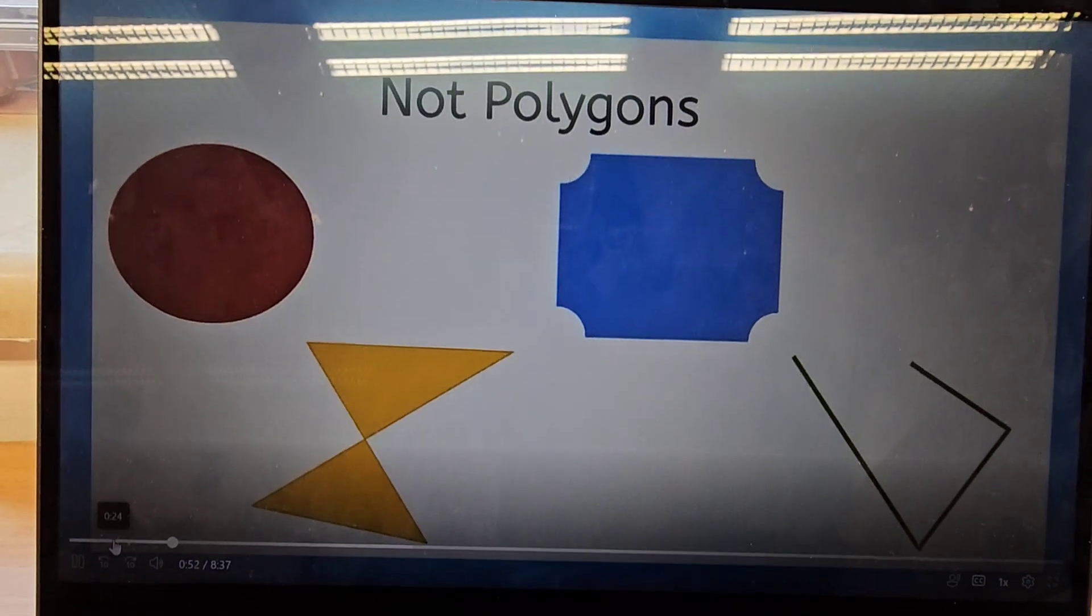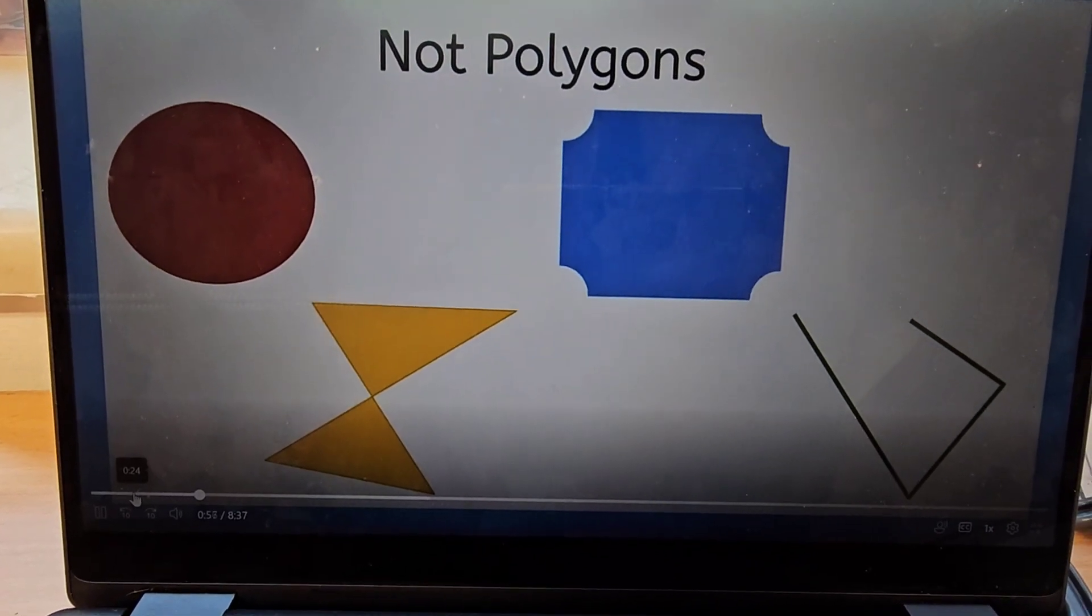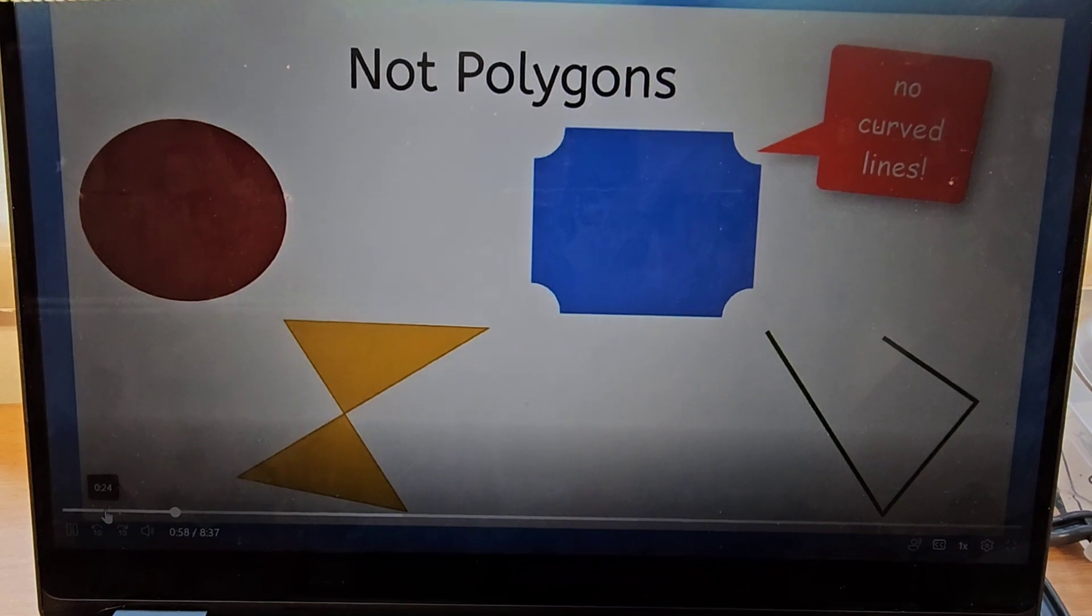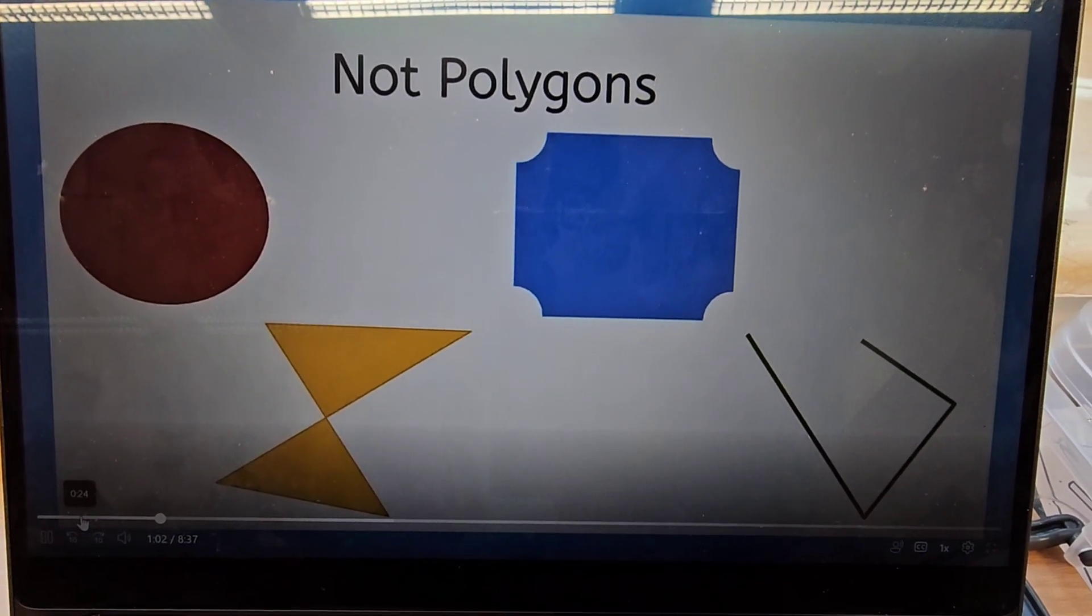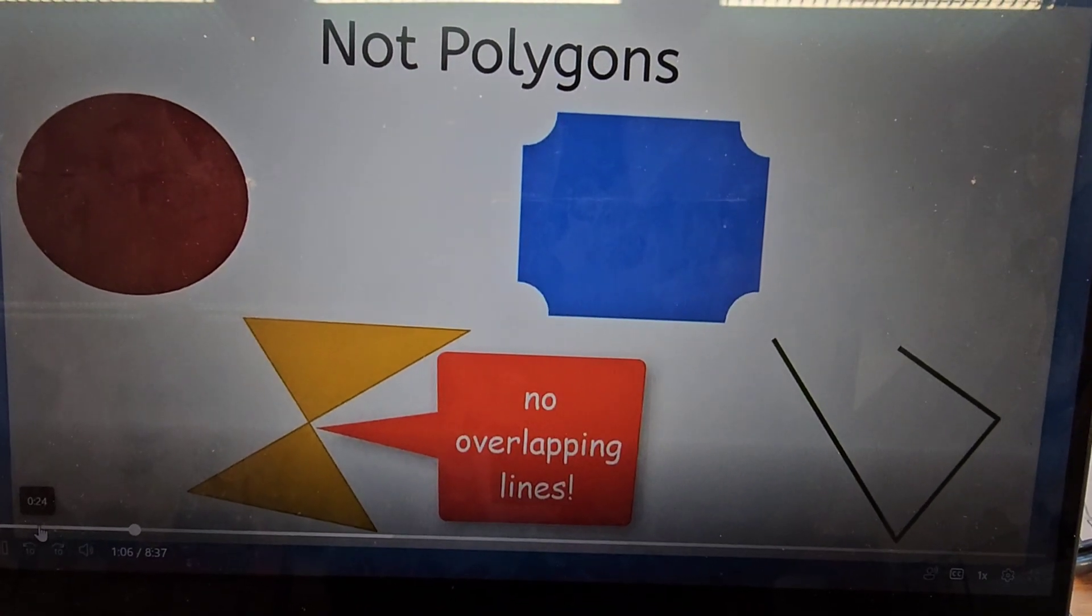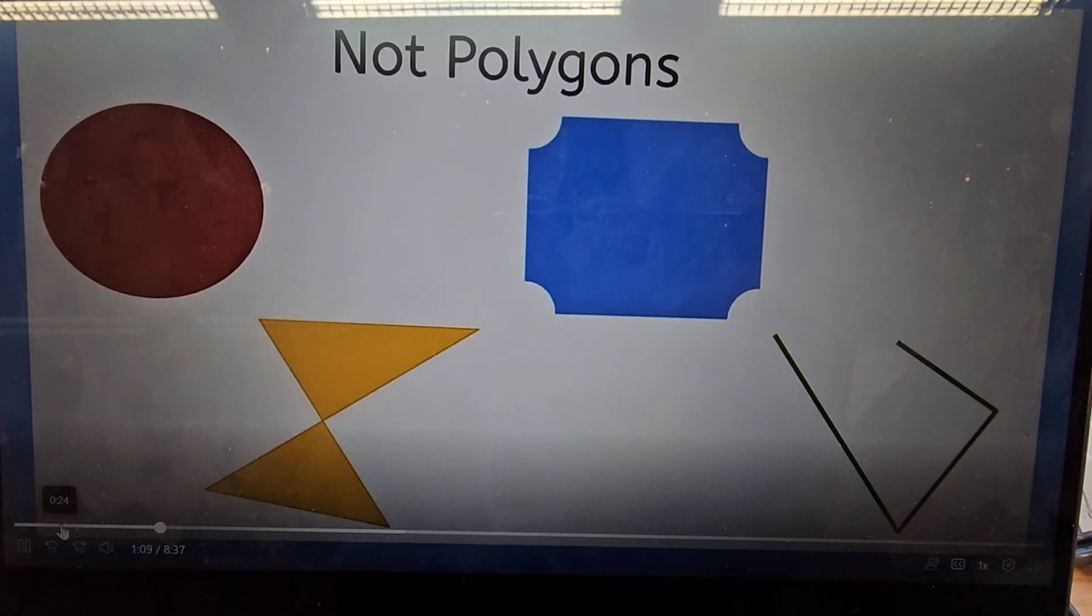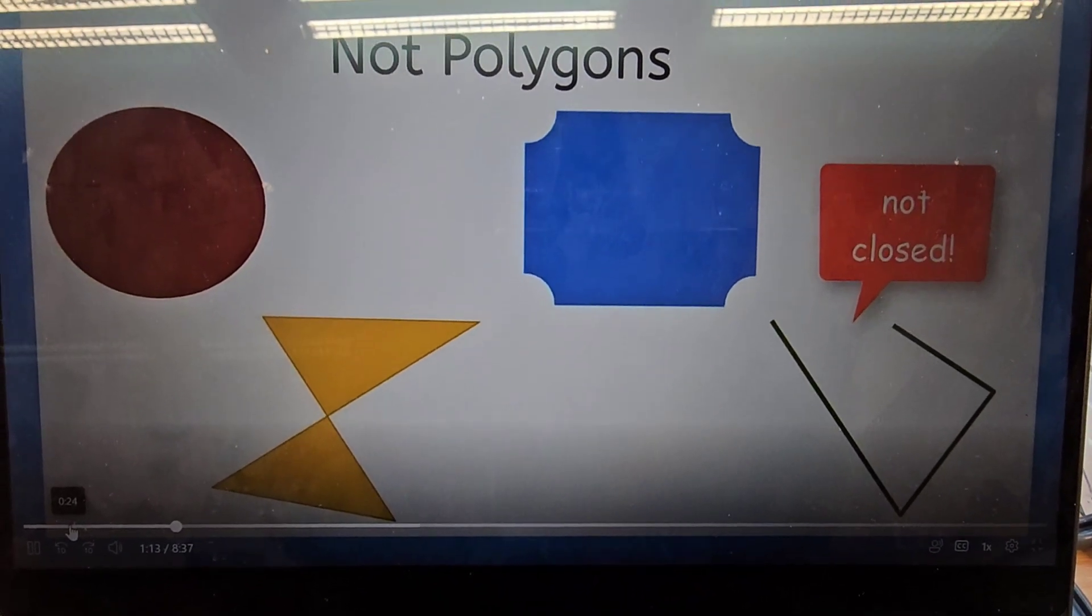These figures are not polygons. The red and blue shapes have curved lines. Polygons do not have curved lines. The yellow figure has lines that intersect or cross each other. Polygons do not have lines that overlap. And the outline of the green figure is not closed. Notice that the lines are not connected at a vertex.